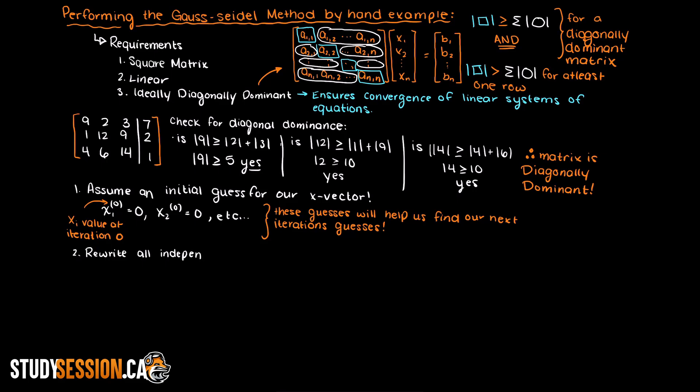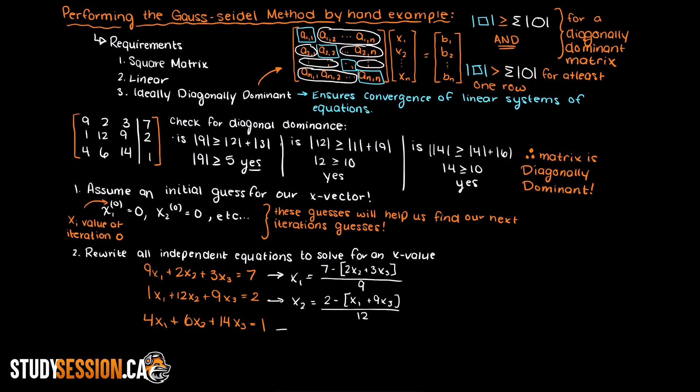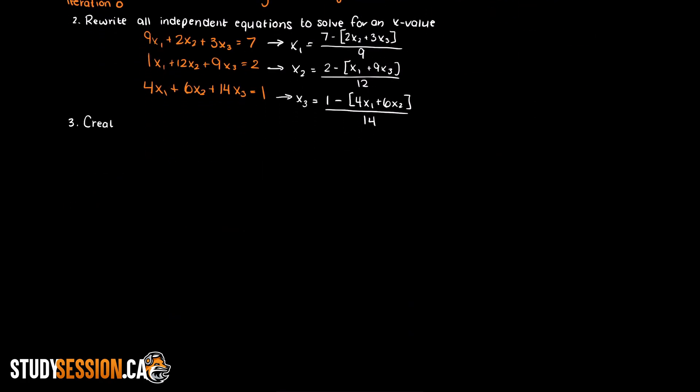Now step 2, we must rewrite all of our independent equations in terms of one x value. So the easiest way to understand this is to actually write out the equations like so and then solve for the x value. Now, as you can see here, every one of our independent equations is now solving for one of our unknown x terms.